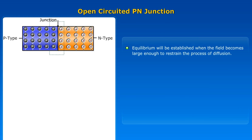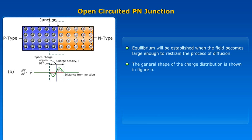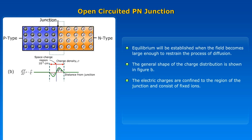Equilibrium will be established when the field becomes large enough to restrain the process of diffusion. The general shape of the charge distribution is shown in figure B. The electric charges are confined to the region of the junction and consist of fixed ions.